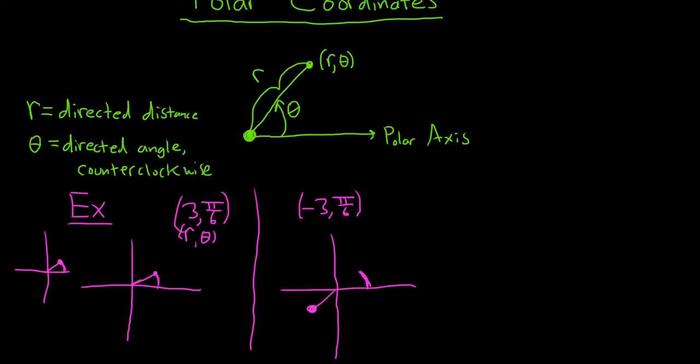So if r is positive, you go up to where the angle ends. If r is negative, you go the other way.